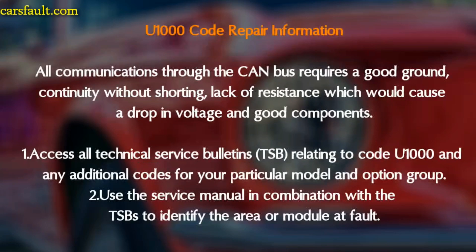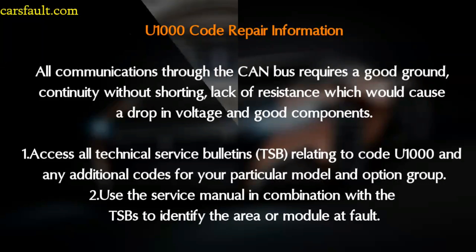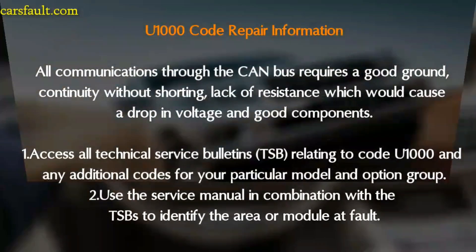Now let's go over how to repair the U1000 code. All communication throughout the CAN bus requires good ground continuity, without shorts or lack of resistance, which would cause a drop in voltage. First, access all Technical Service Bulletins (TSBs) relating to code U1000 and any additional codes for your particular module and option group. Second, use the service manual in combination with the TSBs to identify the area or module at fault.